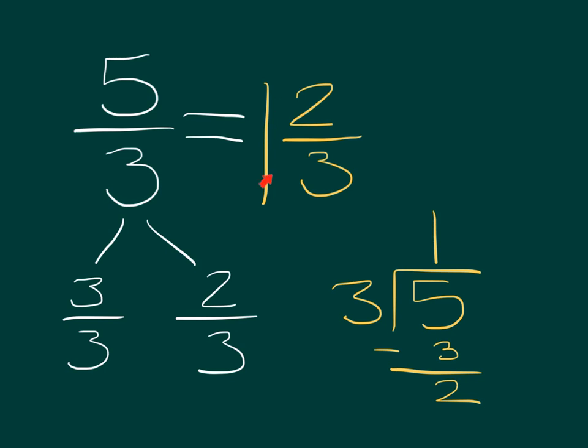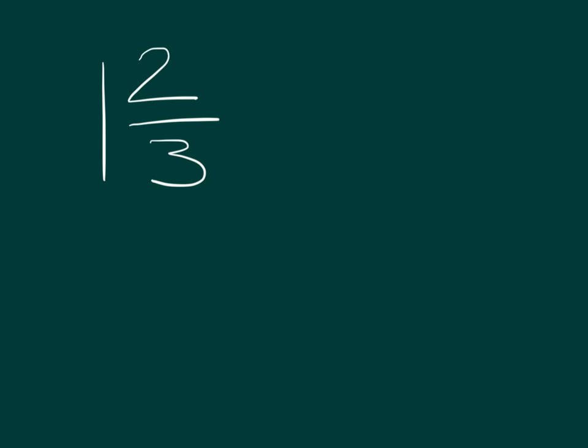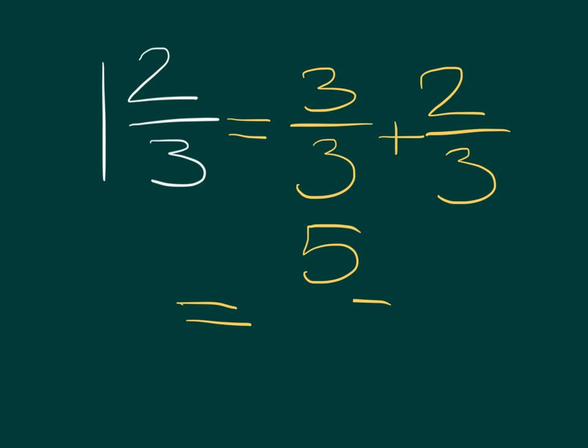Now if we were to reverse that, take a look at this. We have our 1 and 2 thirds. Now this whole, this 1, if it's made up of thirds, well just how many thirds is it made up of? Well it's made up of those 3 thirds. But don't forget, we also had those 2 thirds attached for a total of 5 thirds. So it's the same problem, but reversed.